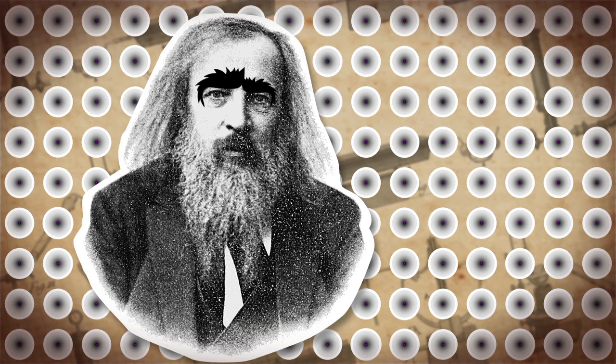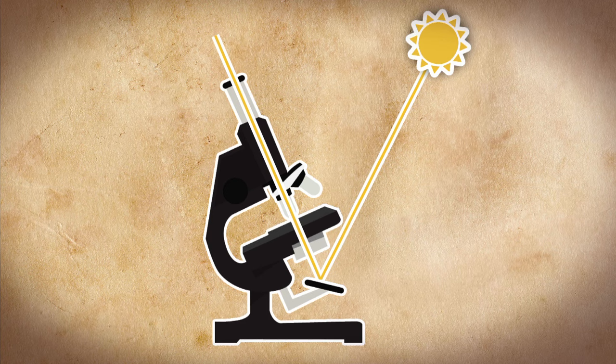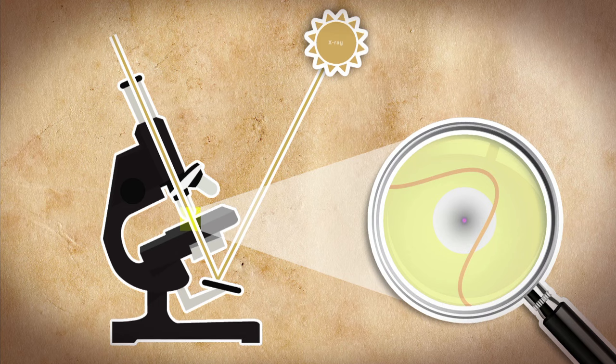So why didn't chemists just look for atoms under microscopes? To see something under a microscope, the wavelength of light you're shining through the microscope can't be larger than whatever you're looking at. Unfortunately, visible light is thousands of times bigger than atoms.